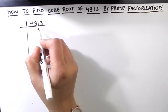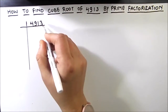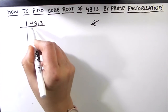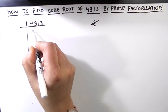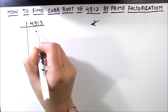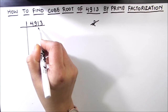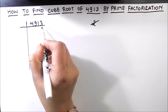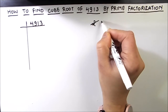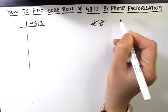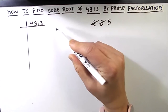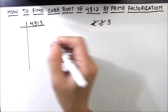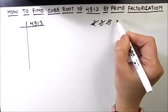Let us find the first prime factor of this number. It is an odd number, so it is not divisible by the first prime number, 2. Let's try dividing by 3: 3 times 1 is 3, 3 times 6 is 18, 3 times 3 is 9, and the remainder is 23, so 3 is not a factor. The next prime number is 5, and this number is not divisible by 5 because for divisibility by 5, the number should have 5 or 0 in its units place.